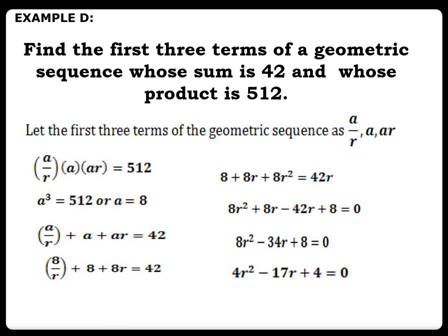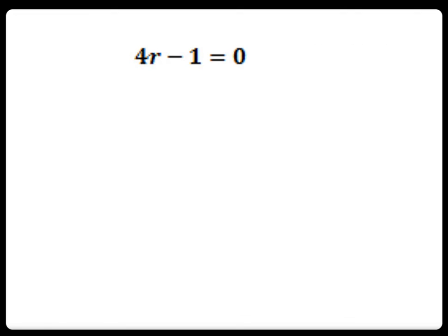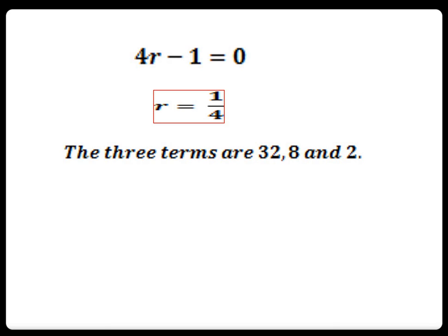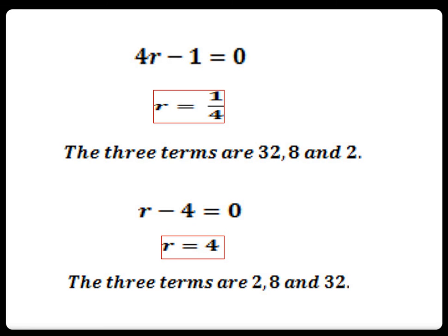By factoring: (4r minus 1)(r minus 4) equals 0. Using the first factor, 4r minus 1 = 0 gives r = 1/4, so the three terms are 32, 8, and 2. Using the second factor, r minus 4 = 0 gives r = 4, so the three terms are 2, 8, and 32.